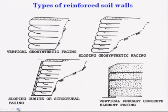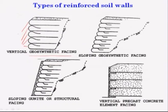One is your vertical geosynthetic face — the reinforced wall can be arranged in such a way that it stands vertically with a geosynthetic face in the vertical direction. The other is your sloping geosynthetic facing — you can make a reinforced earth wall as a slope with respect to horizontal. This is called sloping geosynthetic facing.